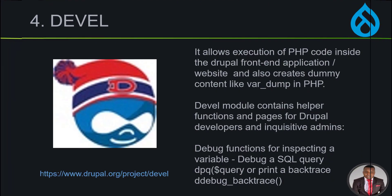The fourth one is Devel. It allows execution of PHP code inside the Drupal front-end application or website and also creates dummy content. Like var_dump in PHP or die dump in Laravel, it helps you see variables running behind the scenes — you just dump them while developing your module or theme. It also contains helper functions for pages and helps to inspect variables and debug SQL queries.